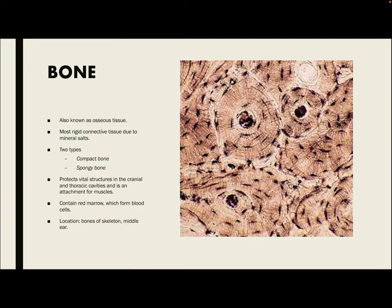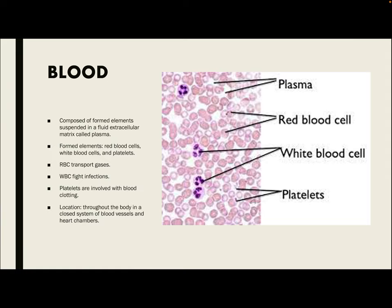Next, we have bone, also known as osseous tissue, which is the most rigid connective tissue due to mineral salts. There are two types: compact bone and spongy bone. Bone is located in the bones of the skeleton and the middle ear. It protects vital structures in the cranial and thoracic cavities and serves as an attachment for muscles.